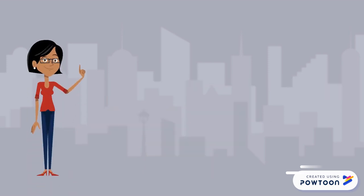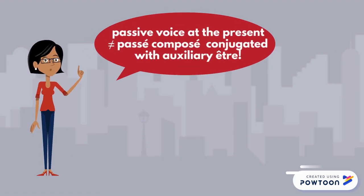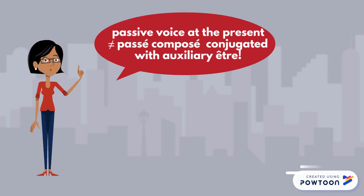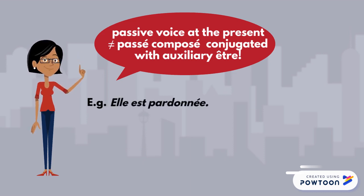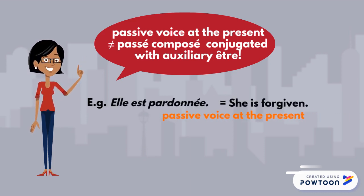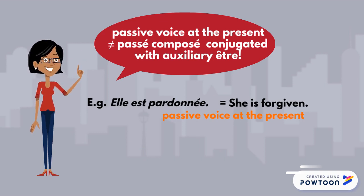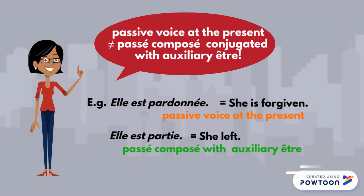Be careful: don't mistake the passive voice at the present with the passé composé of verbs conjugated with the auxiliary être. For instance, elle est pardonnée — she is forgiven — is the passive voice at the present. And elle est partie — she left — is the passé composé with the auxiliary être.